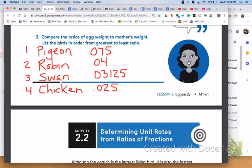For number 3, here is the list of birds in order from greatest to least. We have pigeon for number 1, robin number 2, swan number 3, and chicken number 4. The strategy that I used was to convert each ratio from number 2 into decimal form in order to put the birds in order from greatest to least.